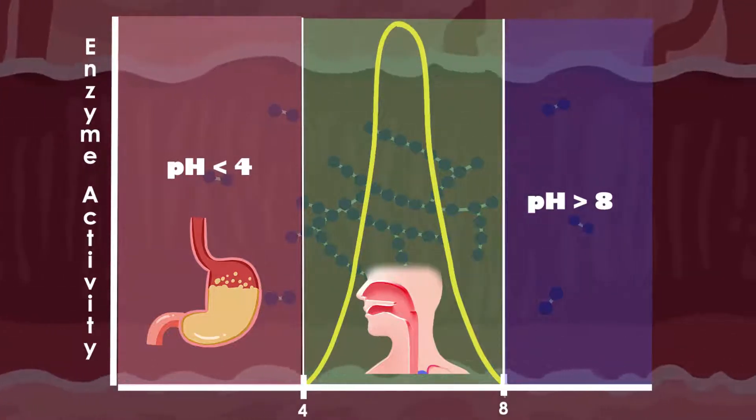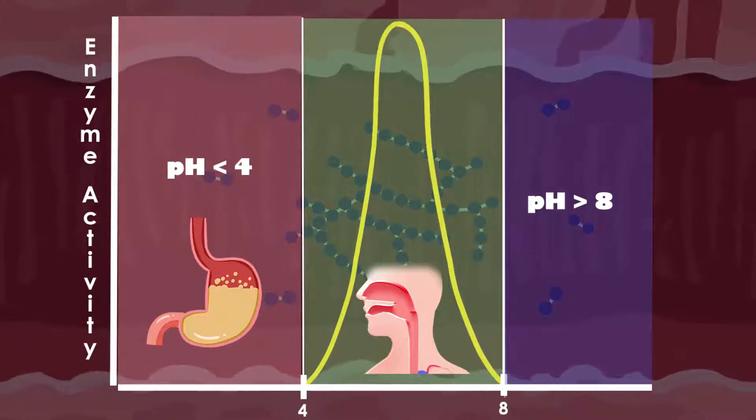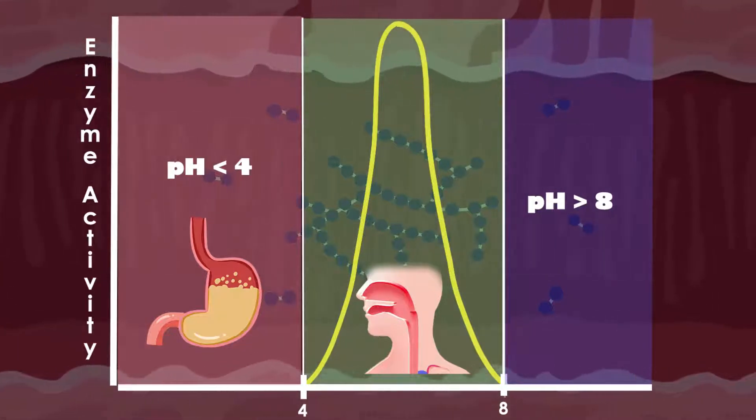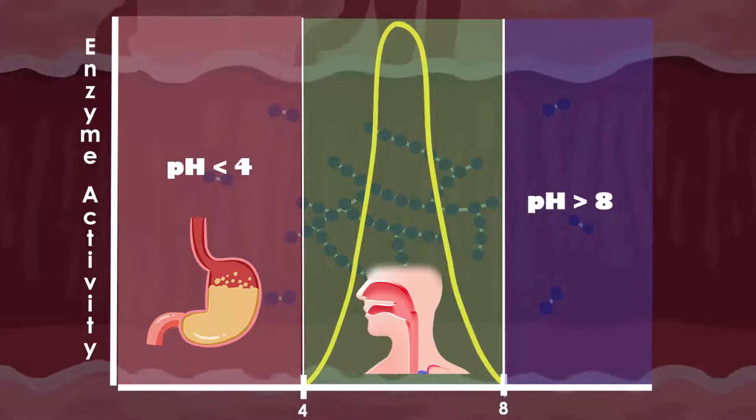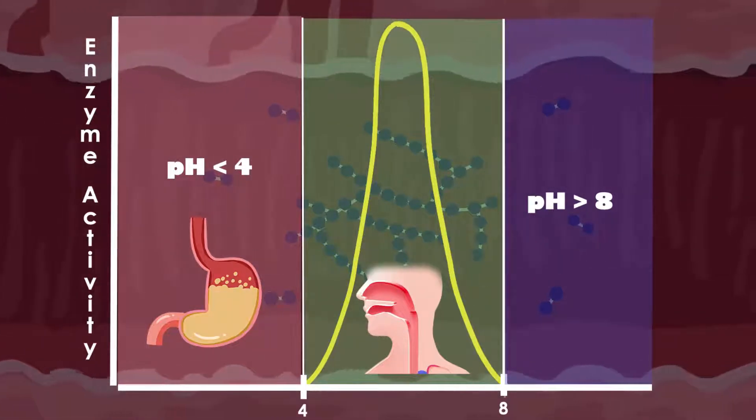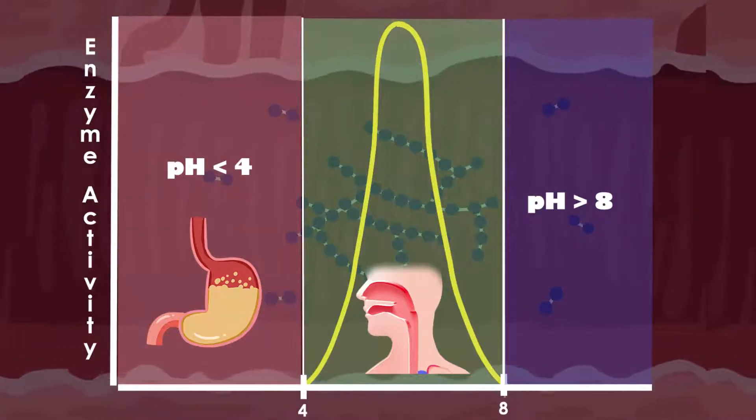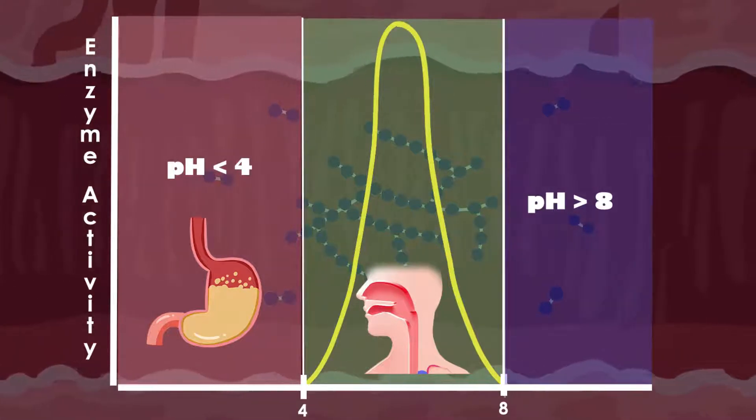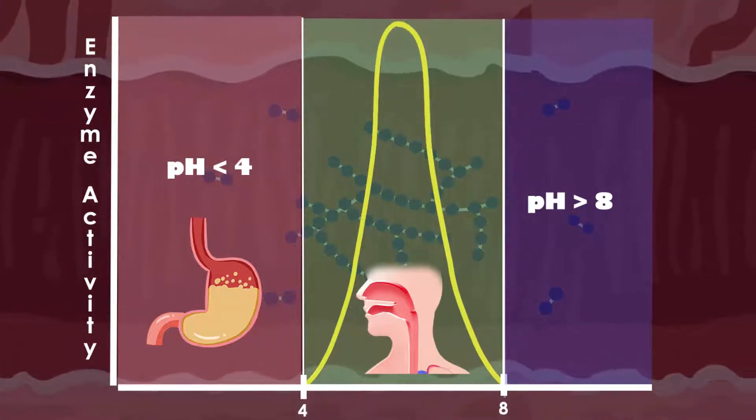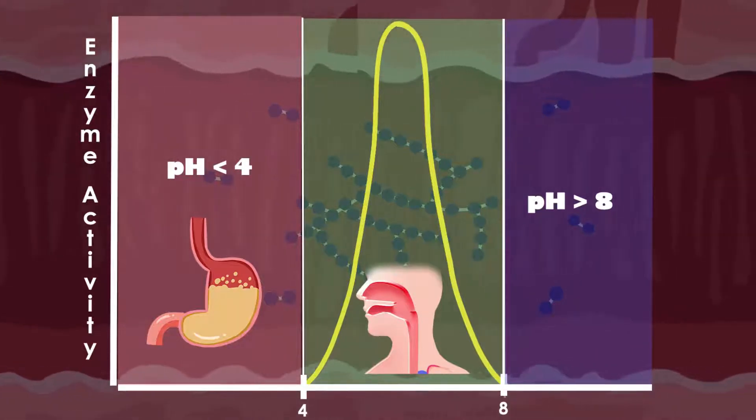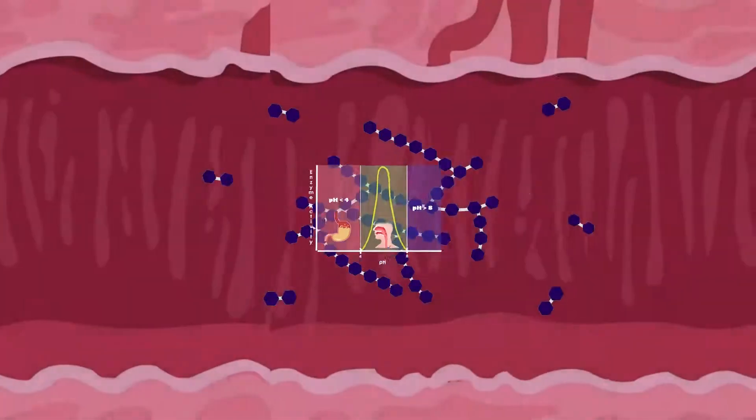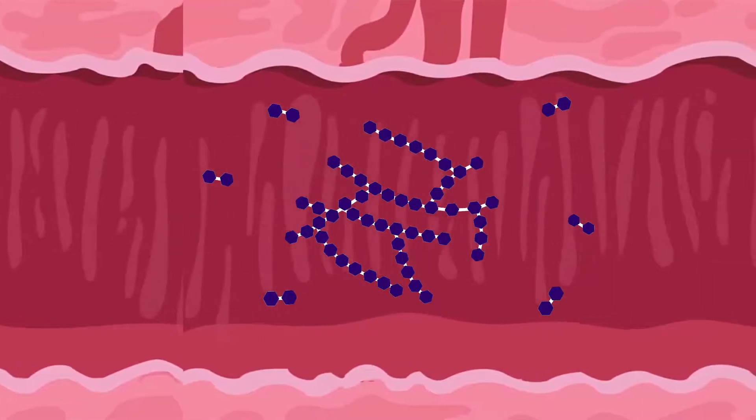Salivary amylase has a pH optimum of about 6.7 to 7 and is completely inactive below pH of 4. So as soon as food enters the stomach, which has a pH of about 2, the salivary amylase gets completely inactivated. Then there's almost no carbohydrate digestion in the stomach.